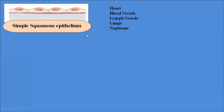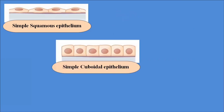Another type of simple epithelial tissue is the simple cuboidal epithelium. It is composed of a single layer of cube-shaped cells fitting closely together. These cells provide the lining to the kidney tubules and the thyroid. They are specifically involved in the processes of secretion, absorption, and excretion in these organs.